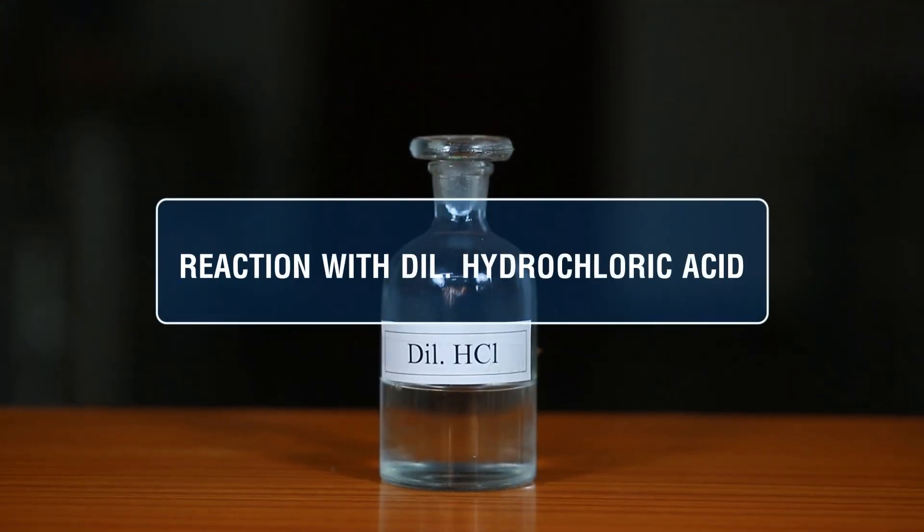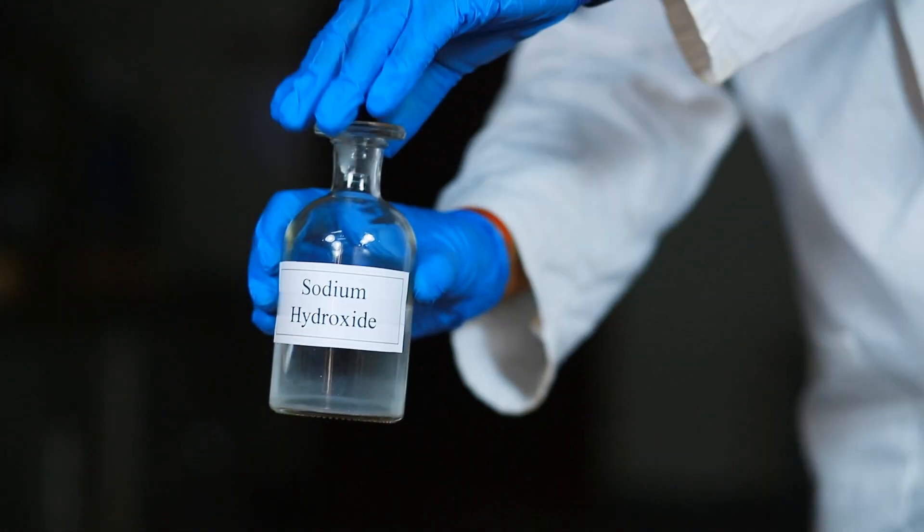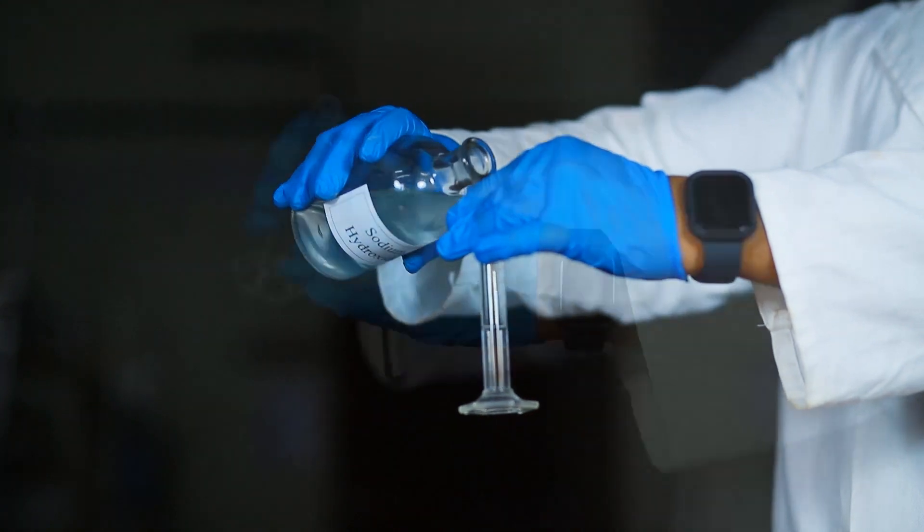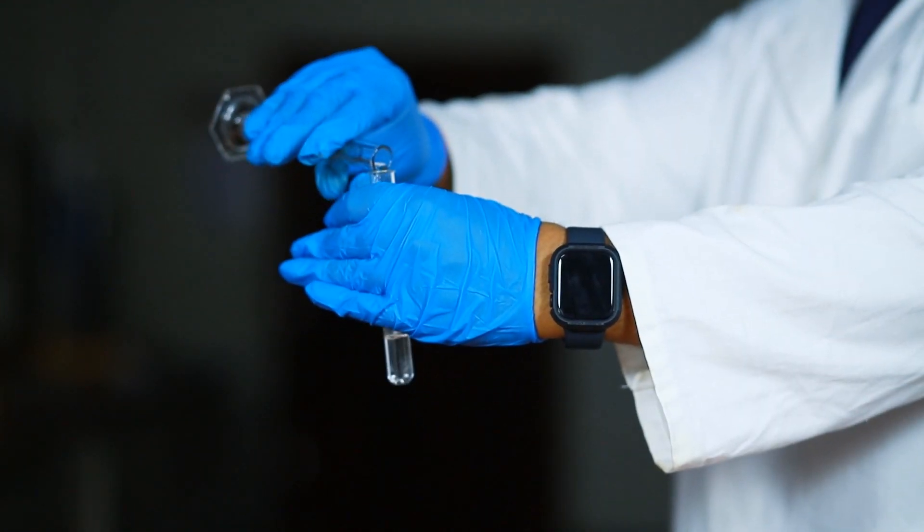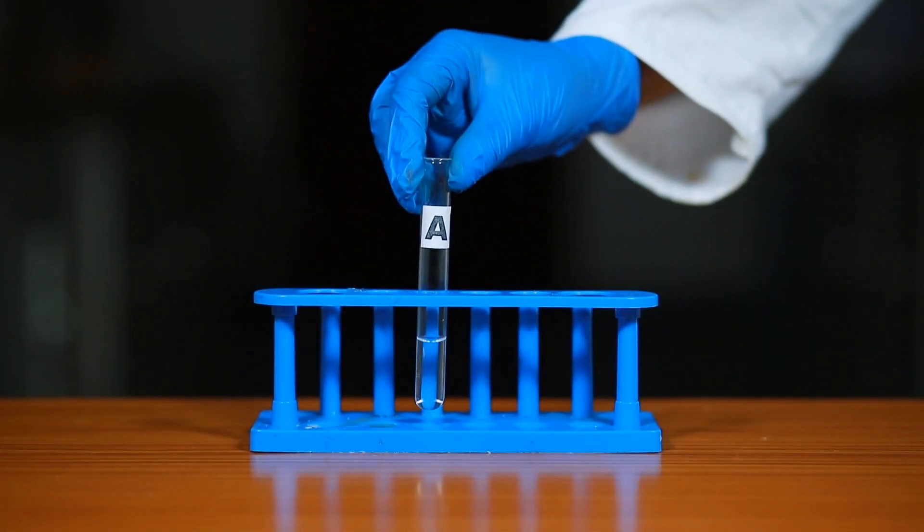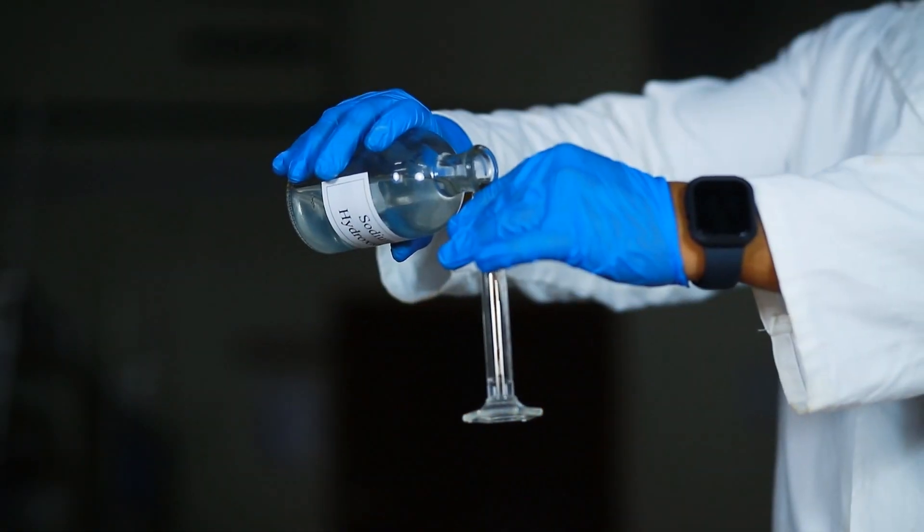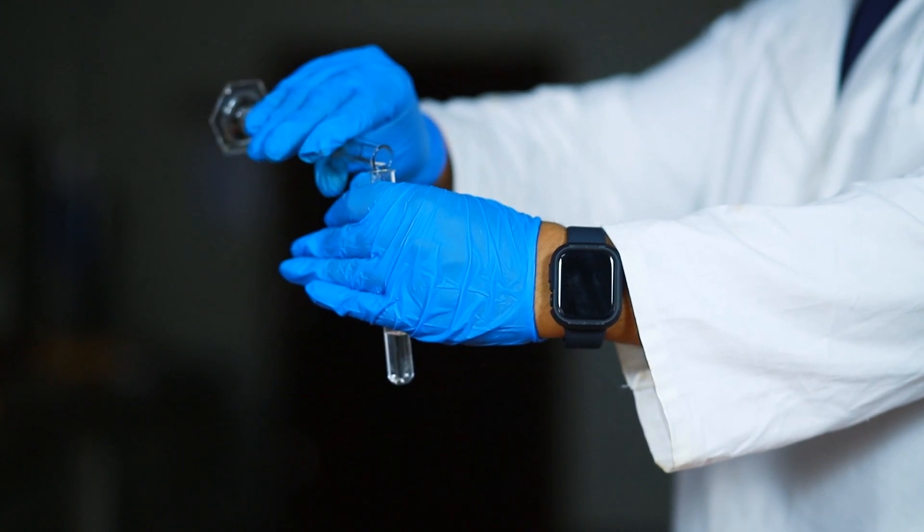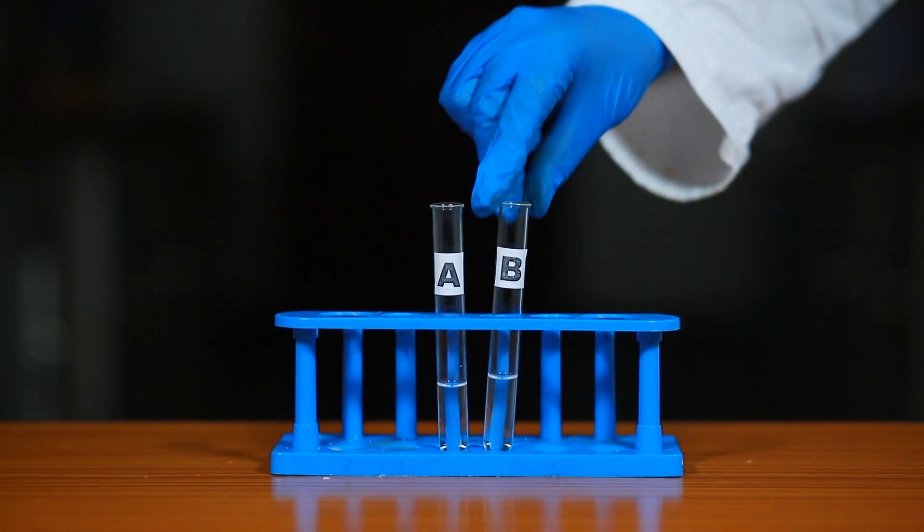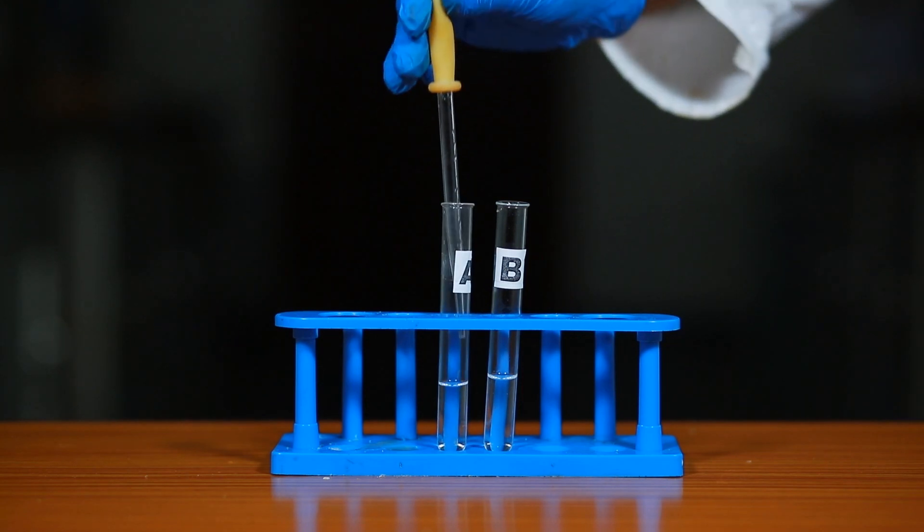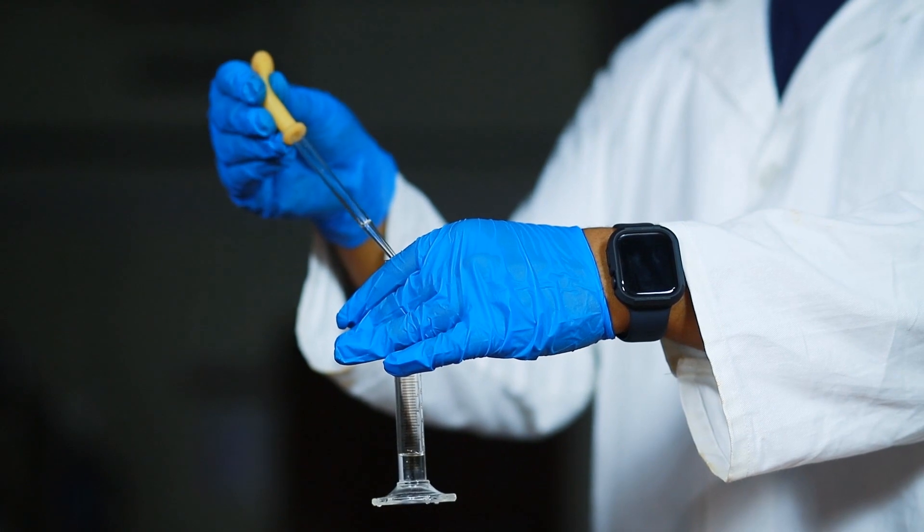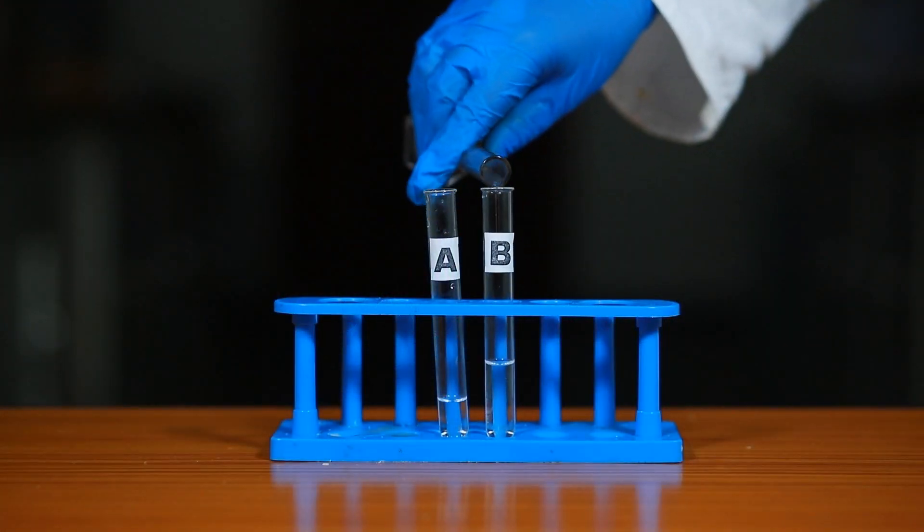Reaction with dilute hydrochloric acid: take 5 ml of dilute sodium hydroxide solution in a measuring cylinder and pour it in the test tube and label it as A. Similarly, take 5 ml of dilute sodium hydroxide solution in another test tube and label it as B. Add dilute HCl 2 ml from test tube A drop-wise to dilute NaOH contained in test tube B, mixing the solution slowly.